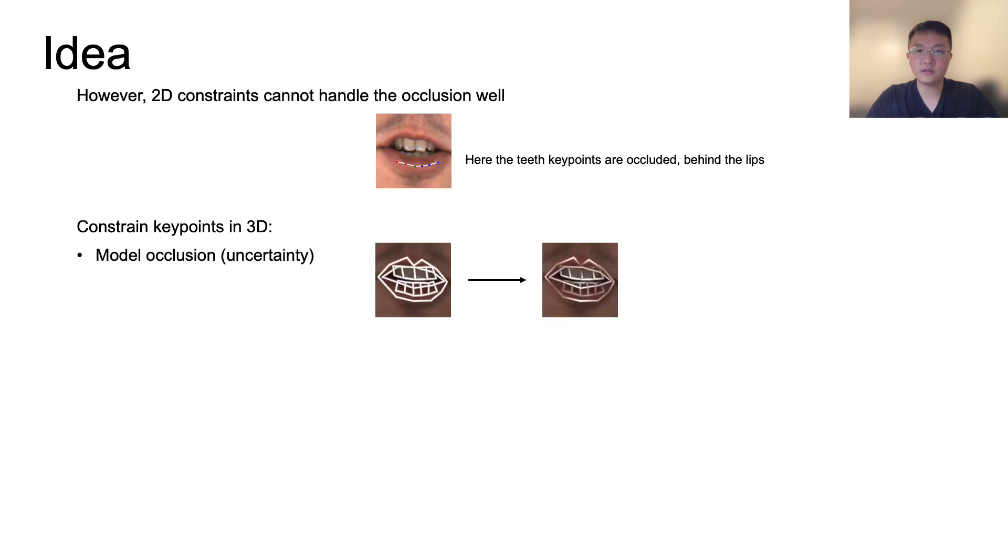First, we predict the certainty of each keypoint and propagate the certainty along edges. This prevents the image reconstruction from placing occluded keypoints on visible boundaries.